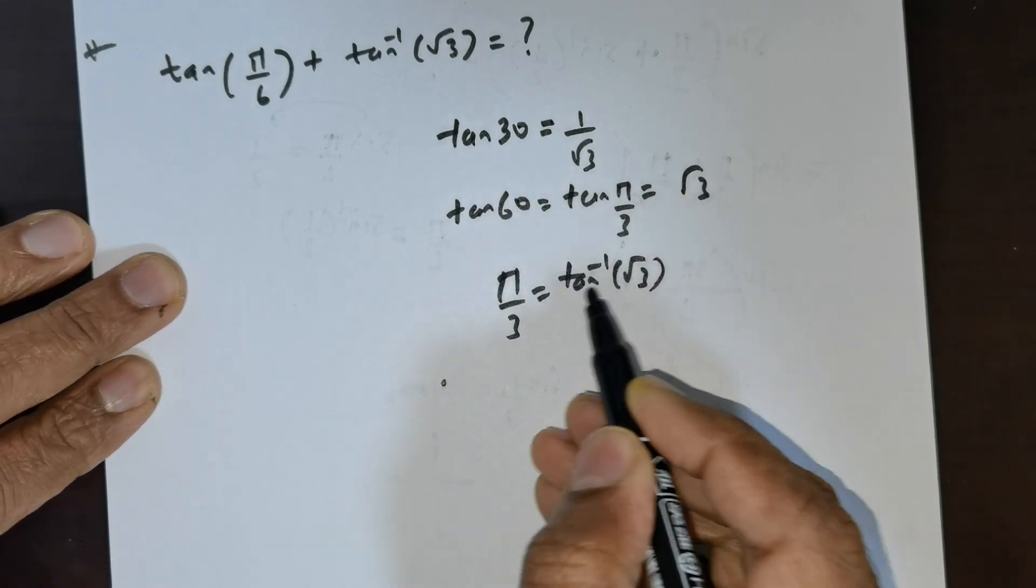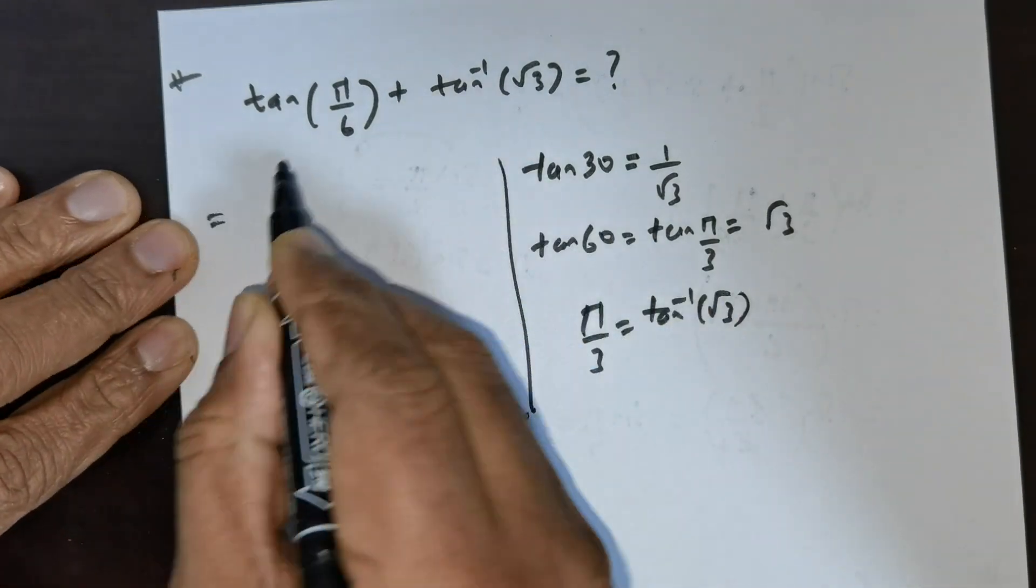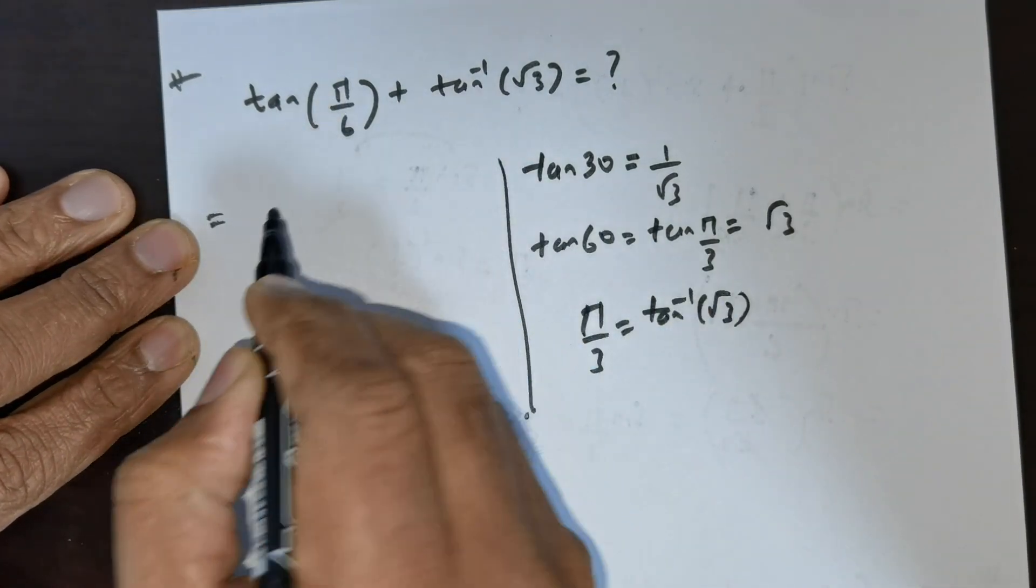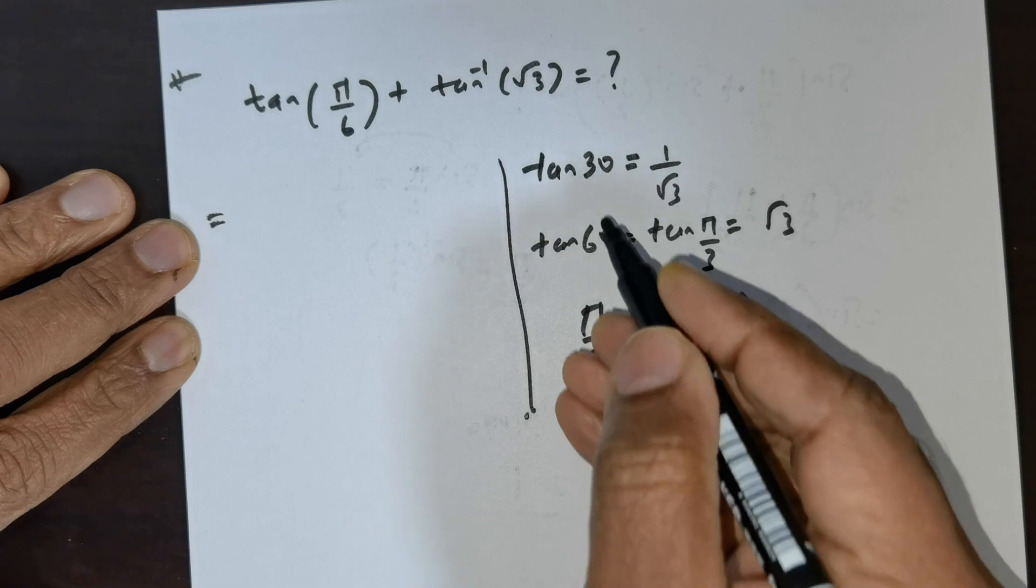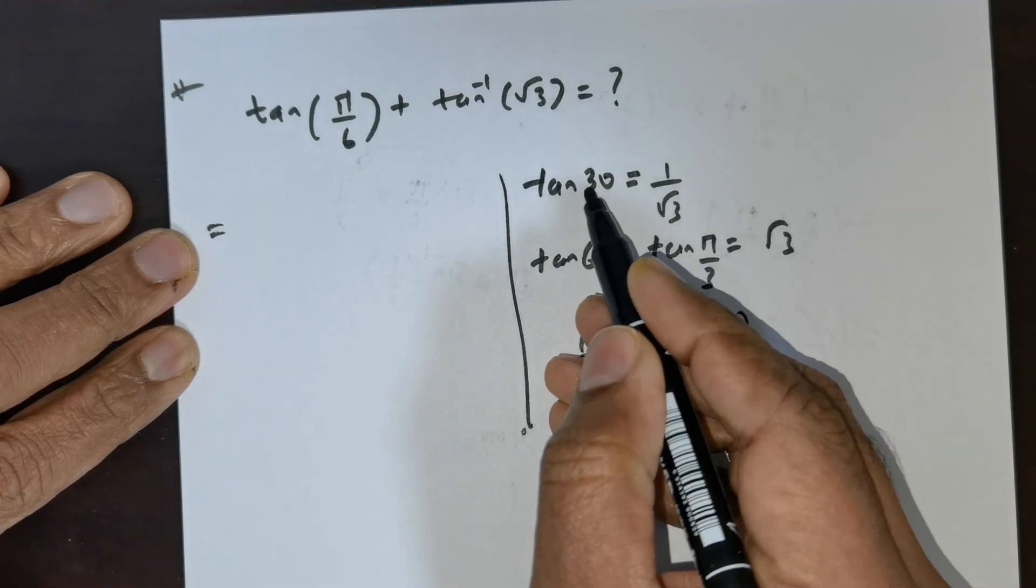Now in place of this, I'm going to substitute this. So this is equal to tan pi over 6. As I mentioned, pi over 6 is going to be tan 30.